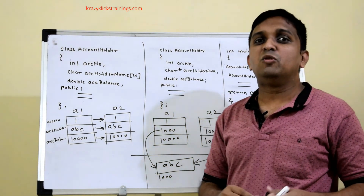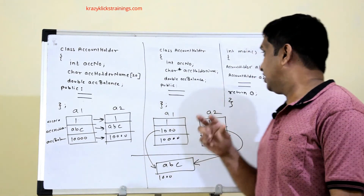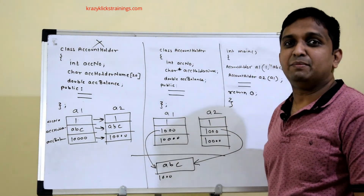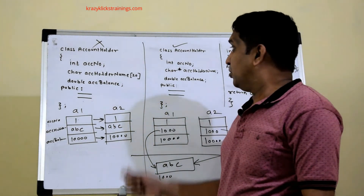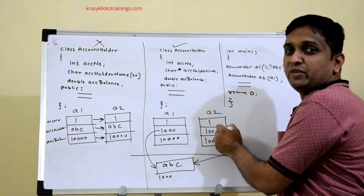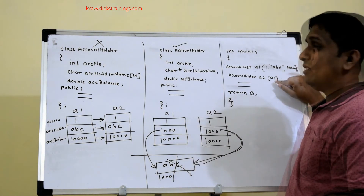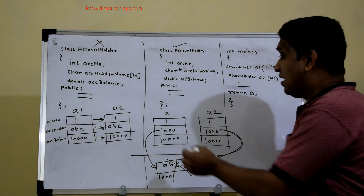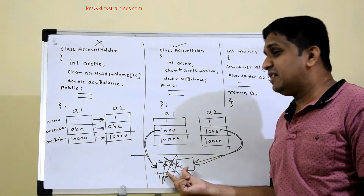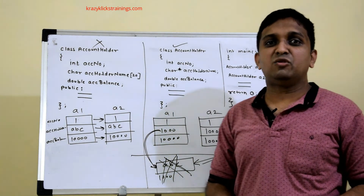When return 0 is encountered in main, the scope of both objects ends. The destructor is called first for a2, which deletes the heap memory block for a2's name pointer. Then the destructor is called for a1, which tries to delete the same memory block a second time. Deleting the same block twice throws a runtime error — that is why we get the error in the pointer-based implementation.